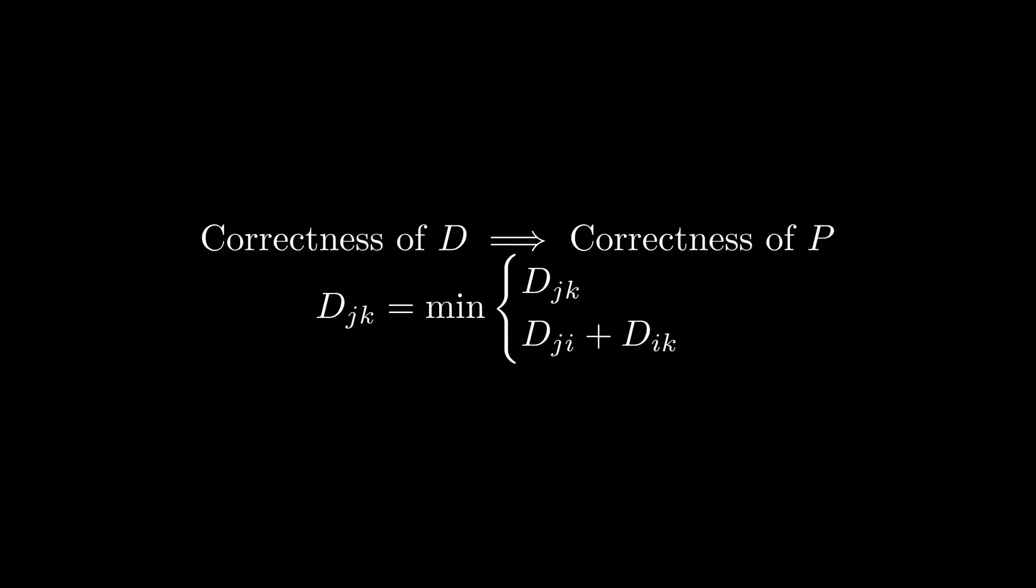Let's prove the correctness of this algorithm via a proof by induction. Since the paths constructed always have the same total weight as the values in the distance matrix, we will assume that the correctness of d will imply the correctness of p. In particular, we will prove the correctness of d by proving the exhaustiveness of the optimization condition djk equals min of djk comma dji plus dik at iteration i. It should be noted that each iteration corresponds to finding the shortest path possible using the first i vertices listed. For our base case, we simply consider the case where no intermediate vertices are inserted. In this case, there is only a path between a pair of vertices with no intermediates if there is a direct edge between them. Hence, the base case is trivially correct.